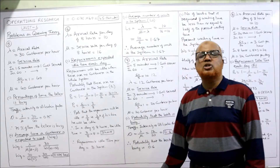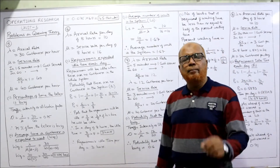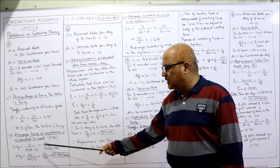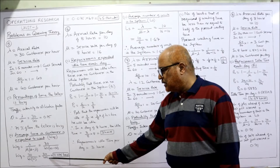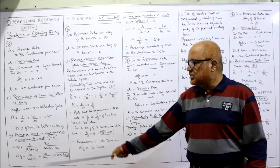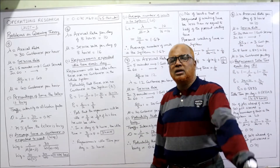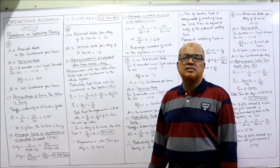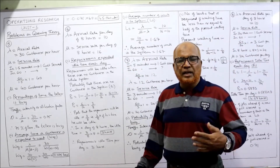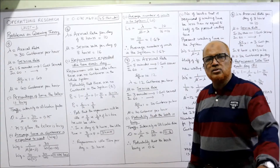Second question: average time a customer is expected to wait in the queue. The formula is Wq = lambda divided by mu multiplied by (mu minus lambda). Substituting: 30 divided by 40 into (40 minus 30) = 30 by 400 = 0.075 hours. To convert to minutes, multiply by 60: 0.075 into 60 = 4.5 minutes. So Wq is 0.075 hours or 4.5 minutes. That is the end of problem number five.